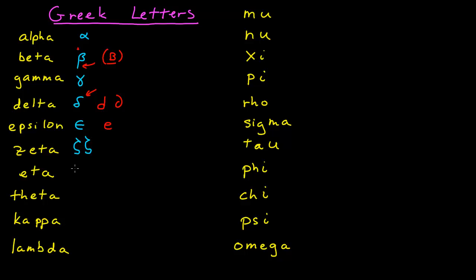Eta. My eta — the main problem is distinguishing it from an n. I have a little curve at the top instead of just a straight line. My first leg I don't bring all the way down, just partially. Then the second leg comes much further down, and I usually add a little tail to it. So that's the main problem with eta: to distinguish it from your n.